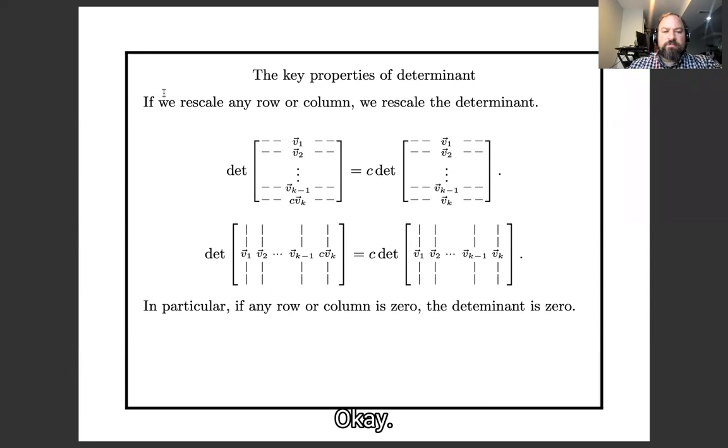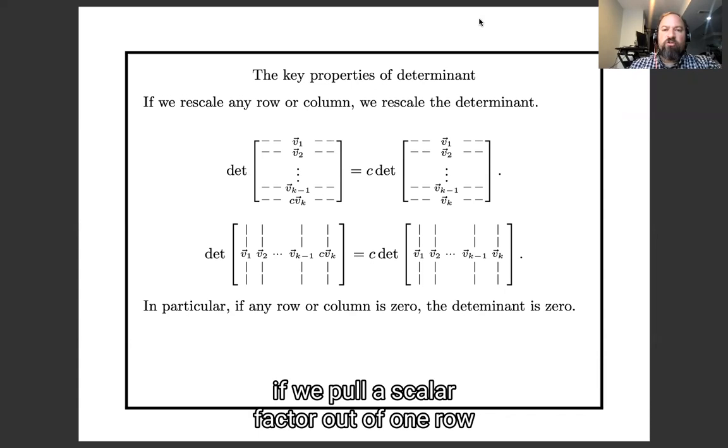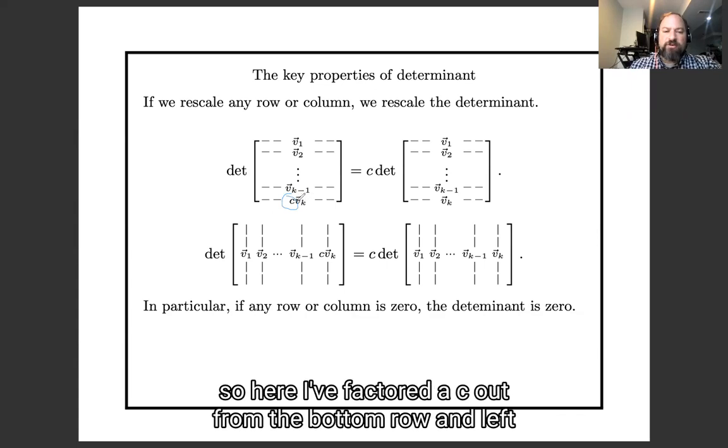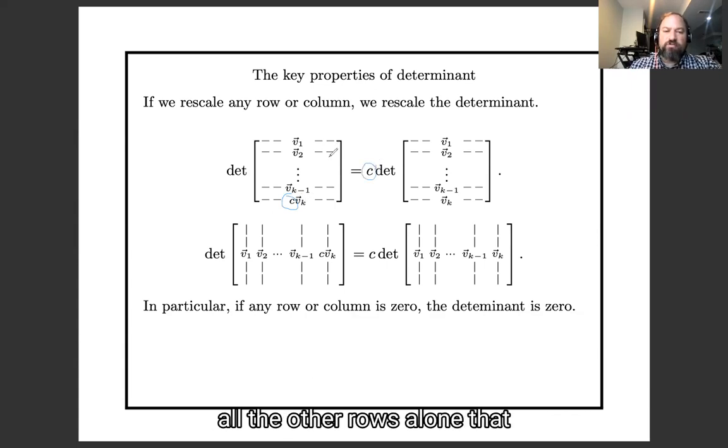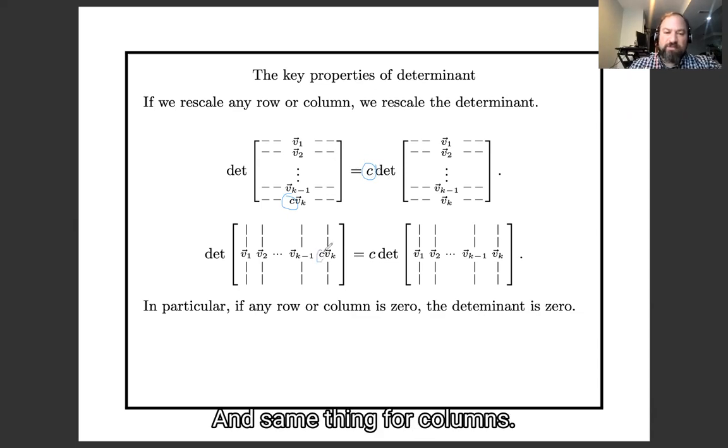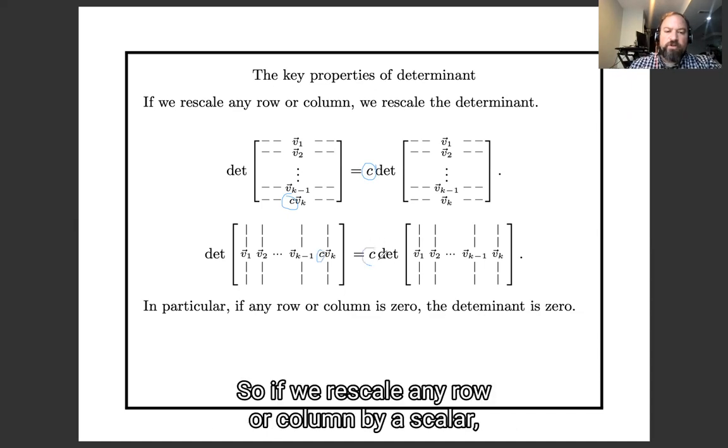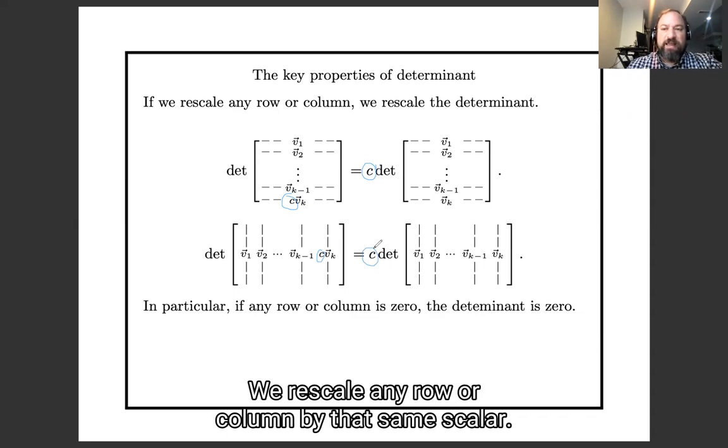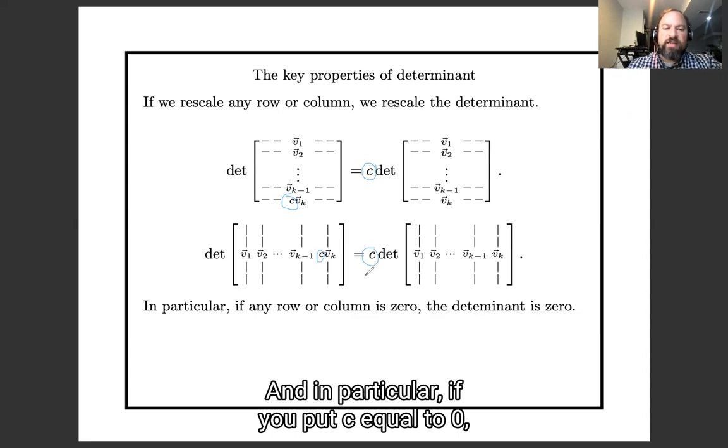Okay, next property, if we pull a scalar factor out of one row, so here I factored a c out from the bottom row and left all the other rows alone, that c pulls out in front of the determinant. And same thing for columns. So if we rescale any row or column by a scalar, we rescale the determinant by that same scalar.